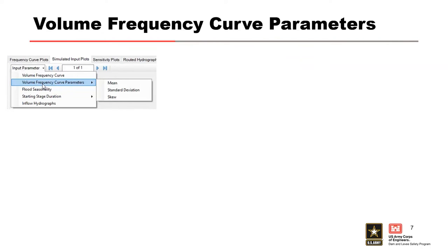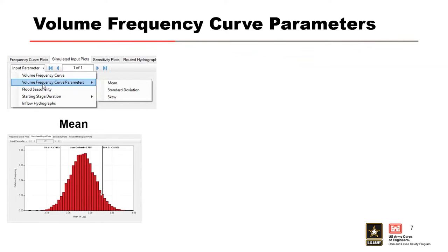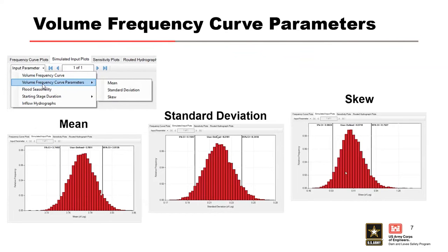The next simulated input plot type is the volume frequency curve parameters. When we're running LP3 frequency, there's three parameters you can look at: the mean, standard deviation, and skew. The plot shows the user-defined values that were input for the parameter at the top of the box there, along with the histogram and the confidence interval for the values that were generated during the simulation. The plots are a compilation of the results over all the realizations. The option to toggle through is grayed out because it just represents all of them. You're not looking at the individual ones.